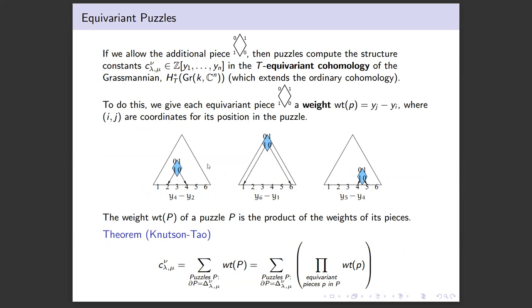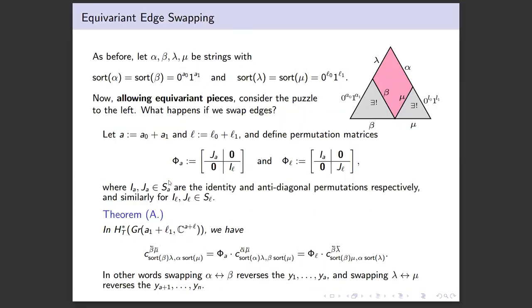We have puzzles with this special piece that computes structure constants in the equivariant cohomology, T-equivariant cohomology of the Grassmannian. Those constants live in this polynomial ring in n variables. It's a richer version of ordinary cohomology, so if we prove something here, it's also proved for the ordinary. How do these compute these polynomial structure constants? Each special piece contributes a weight y_j minus y_i given by where it's located in the puzzle. The weight of the whole puzzle is the product of all the weights of the pieces, and the structure constant is the sum of all the weights of all the puzzles.